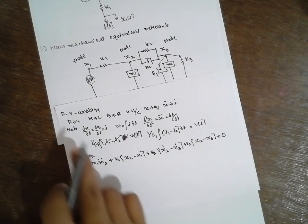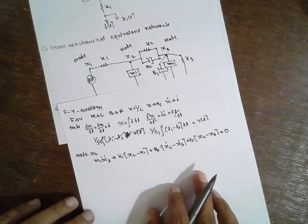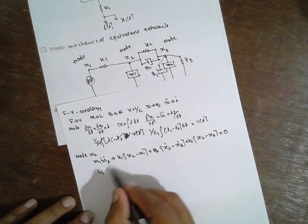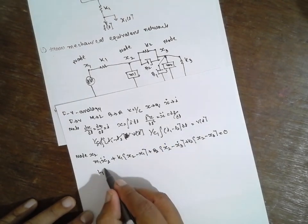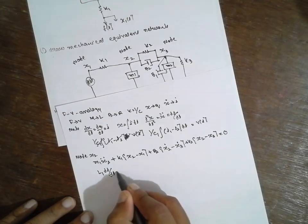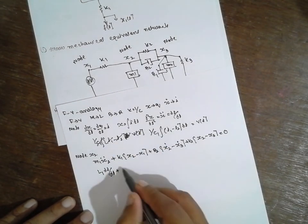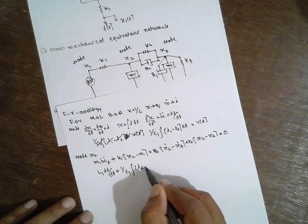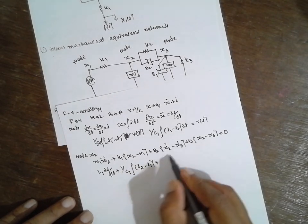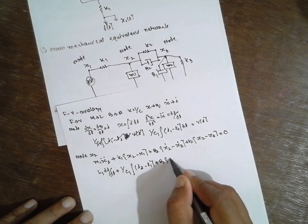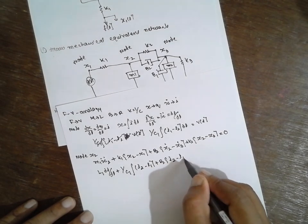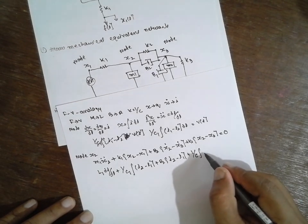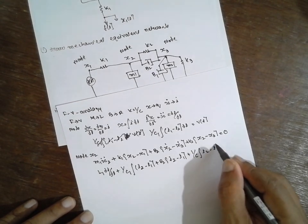Now implement this as follows: the mass is replaced with L1, and x2 double dot becomes di/dt. The equation becomes: L1 di2/dt plus (1/C1) integral(i2 minus i1) dt plus R2(i2 minus i1) plus (1/C2) integral(i2 minus i1) dt equals 0.